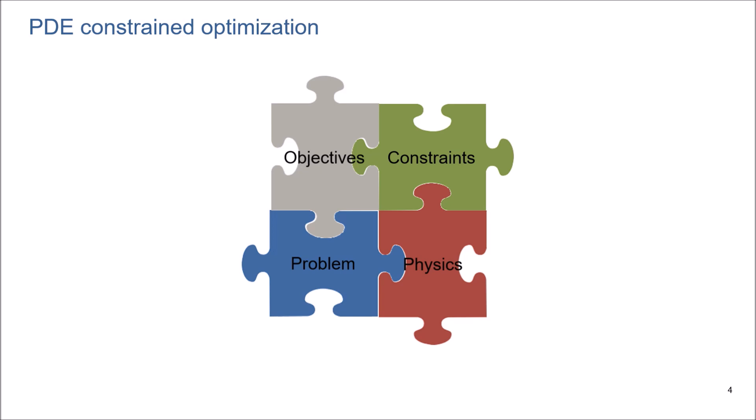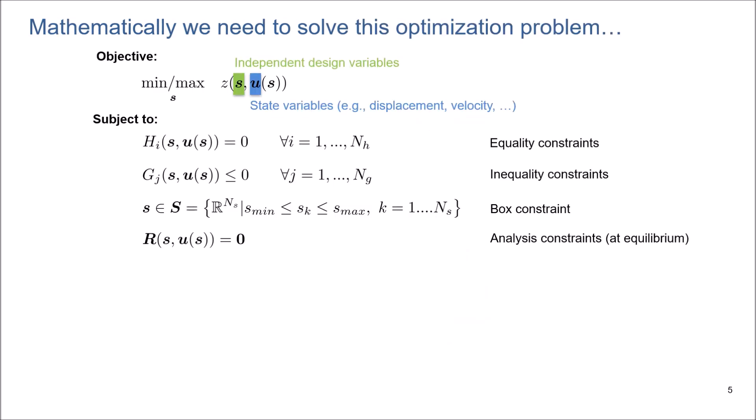Now, the question is how to solve this problem. This is called the PDE-constrained optimization problem, which I will cover in this video series, and topology optimization is one kind of PDE-constrained optimization problem. If we want to formulate this problem mathematically, it's going to be like this.